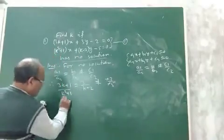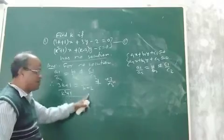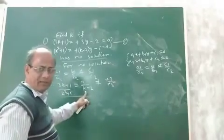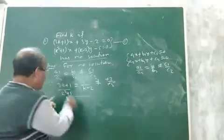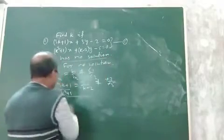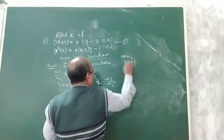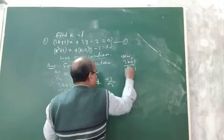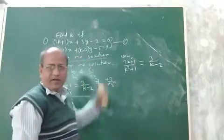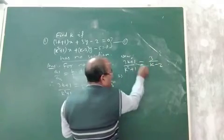Look at this expression: (3k+1)/(k²+1) = 3/(k−2). Now if you solve the equality of these two, you will get the value of k. So first you equate these two and find the value of k. Let us solve it and find the value of k.